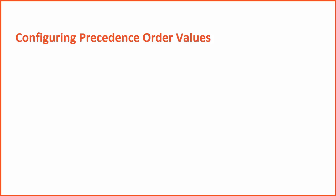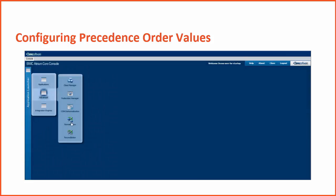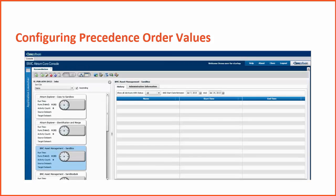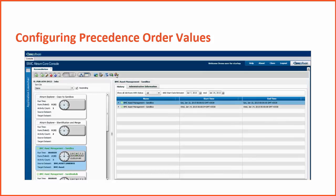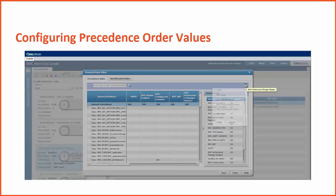Next, we will see how to configure the precedence order through BMC Atrium Core Console. Open the Reconciliation Manager from the BMC Atrium Core Console. Then, open the Standard Rules Editor.